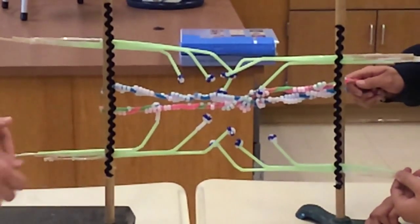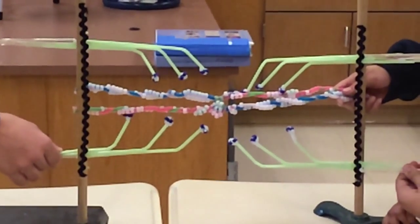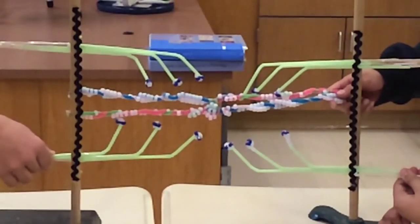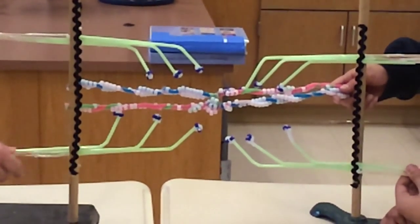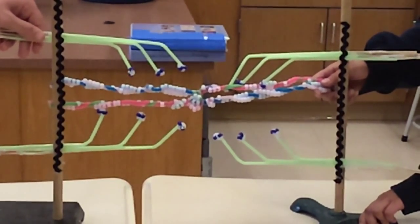The cross bridges then reposition. Troponin and tropomyosin molecules inhibit the interaction between myosin and actin filaments. Muscle fiber then remains relaxed but prepared and ready to become stimulated and contract again.